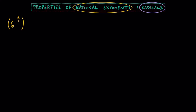So we have 6 to the 2 thirds power, and let's raise that to the 1 half power. If you see something like this and we need to simplify this, just keep in mind we have a power of a power property, which just states that we can go ahead and multiply these exponents together. So if we multiply this 2 thirds by 1 half, we can cross cancel these 2s to become 1s. So we can rewrite this as 6 to the 1 third power. And if you wanted to write the answer in radical form, you can write that as the cube root of 6.